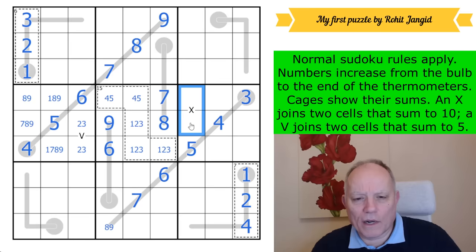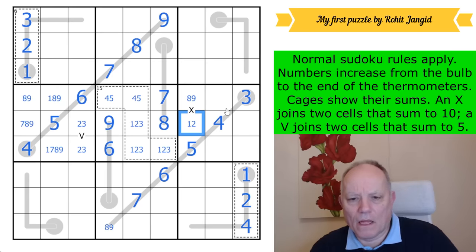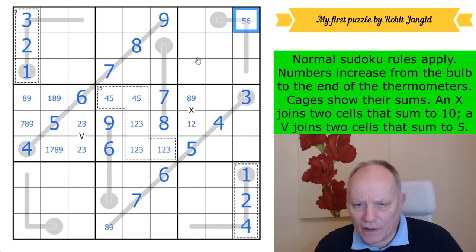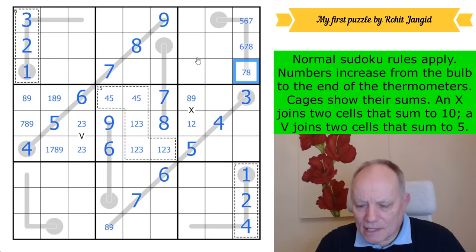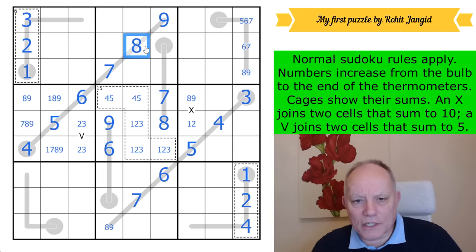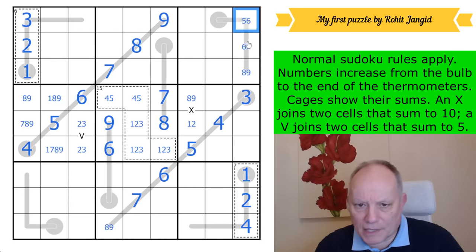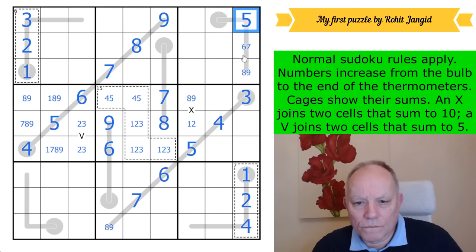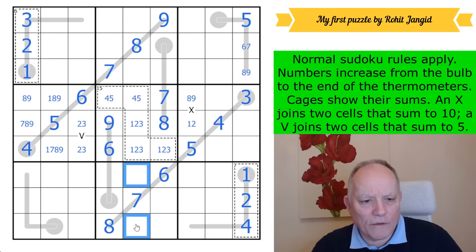These two see six and nine, and we know their order thanks to the thermo. So this really does trip along quite straightforwardly so far. Now this V can't have a four on it. There's two ways to make up a V: four and one, that's not allowed anymore, so it's two and three. In the rest of this box, we have one, seven, eight, and nine to fill in. Over here, this is either a one-nine or a two-eight X. This digit sees one, two, three, four, it is at least five.